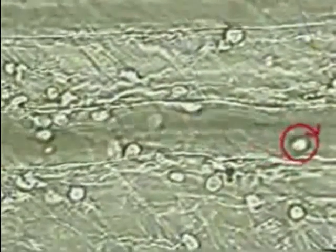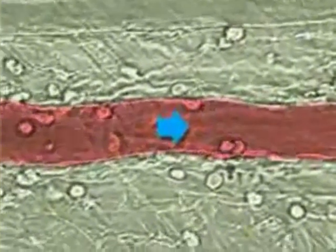Here, leukocyte rolling is observed directly in an anesthetized mouse. The up and down movement of the frame is due to the mouse's breathing. Two blood vessels are shown: the upper one is an artery with blood flowing from right to left, and the lower one is a vein with blood flowing from left to right.